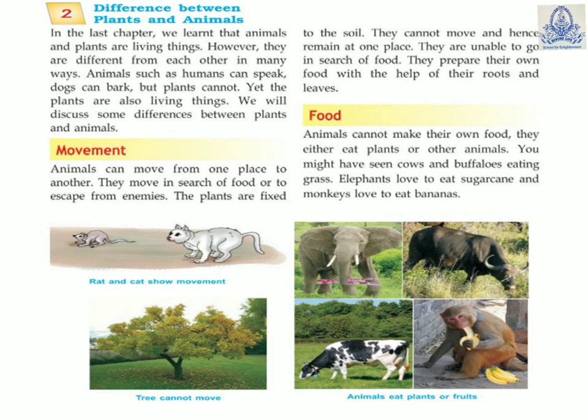We will discuss some differences between plants and animals. Movement: animals can move from one place to another; they move in search of food or to escape from enemies. Plants are fixed to the soil — they cannot move and remain in one place. They are unable to go in search of food; they prepare their own food with the help of their roots and leaves. See the picture: the rat and cat show movement, and trees cannot move.